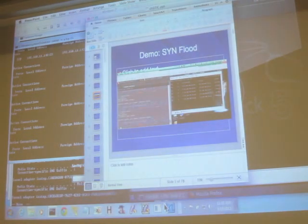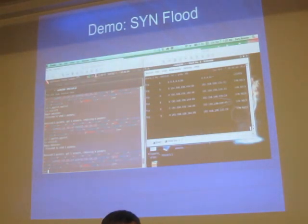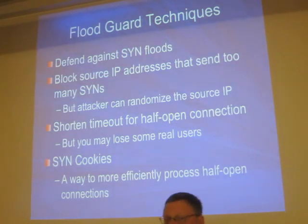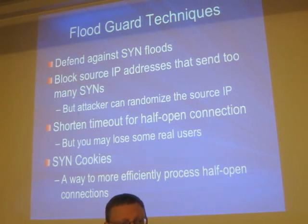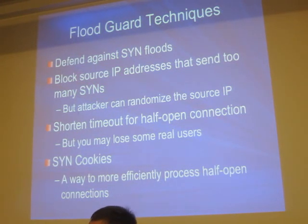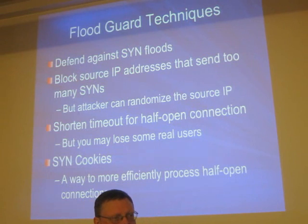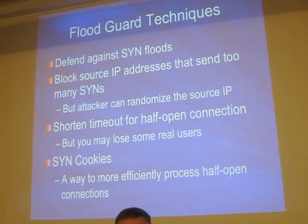A DDoS SYN flood is what Low Orbit Ion Cannon and a whole lot of other attack tools do — one that Anonymous used to take down MasterCard. To prevent yourself from these, there are simple ways. If you attack from a single machine, all they have to do is block that IP address — set the firewall to throw away traffic from you. Lawrence Berkeley Labs uses Bro, an intrusion detection system that blocks anyone sending an attack packet for about half an hour. At any given time they have about 50,000 IPs blocked, and they keep their network up just fine.